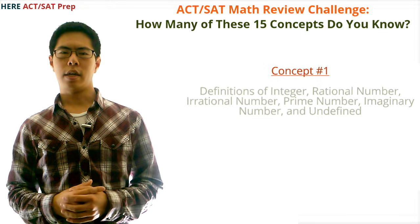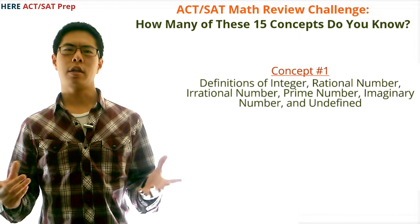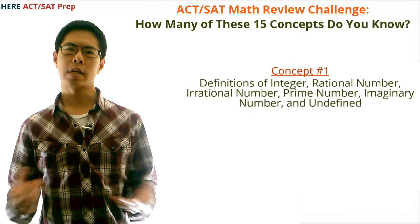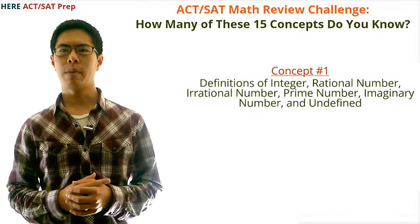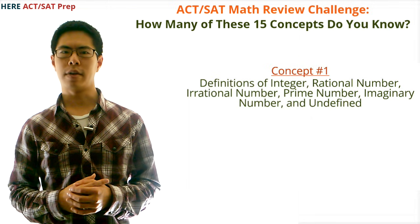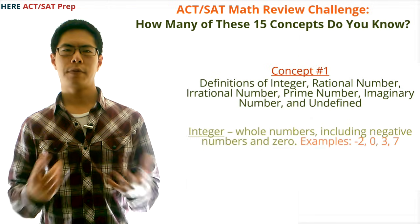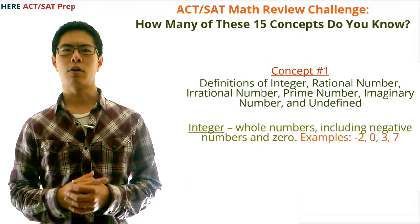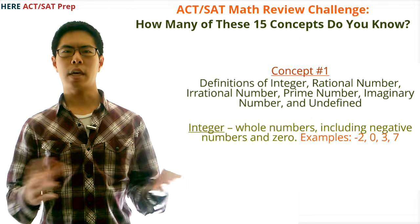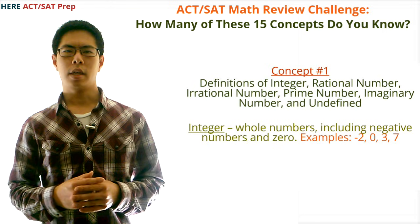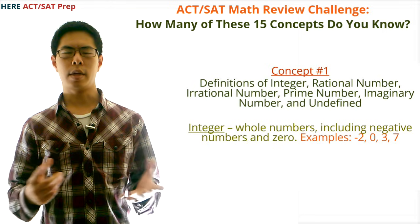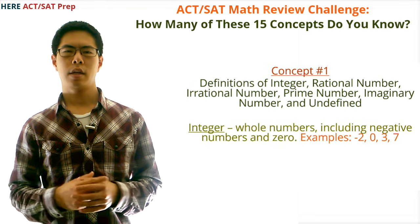Concept number one: definitions of integer, rational number, irrational number, prime number, imaginary number, and undefined. First, integers are whole numbers, including negative numbers and zero. Examples of integers are negative two, zero, three, and seven.